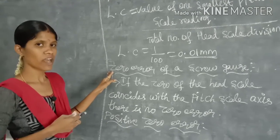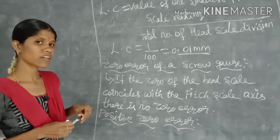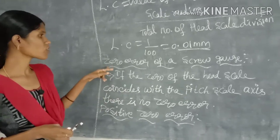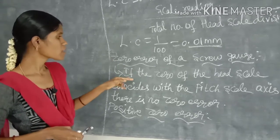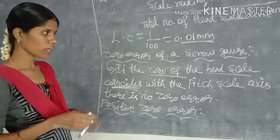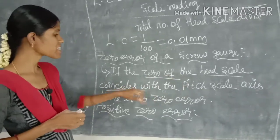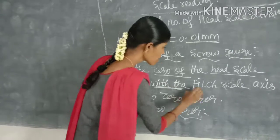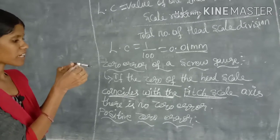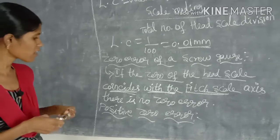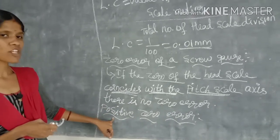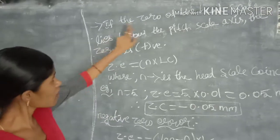Now the zero error of the screw gauge — similar to the vernier caliper, there can be positive or negative zero error. If the zero of the head scale coincides with the pitch scale axis, then there is no zero error.